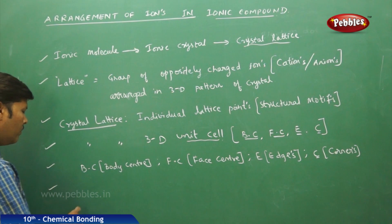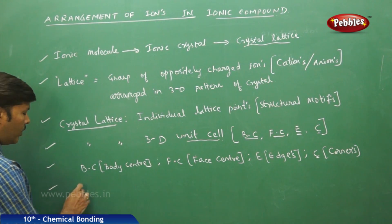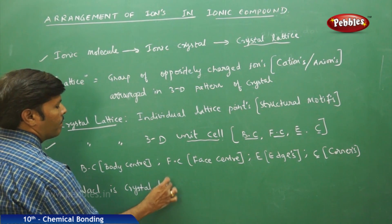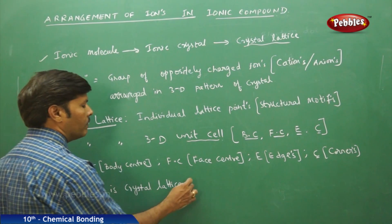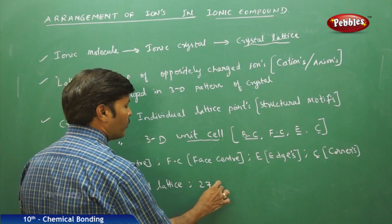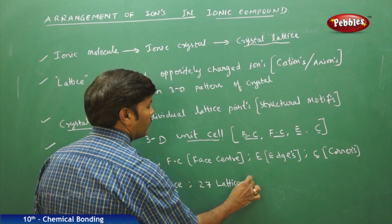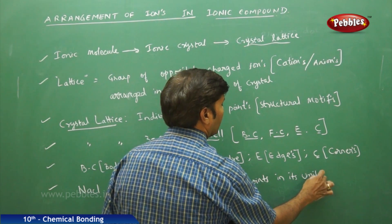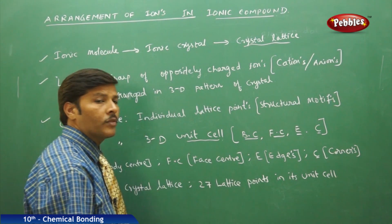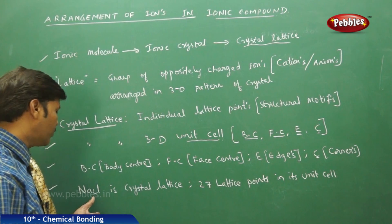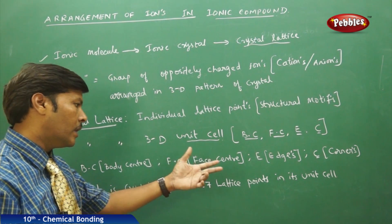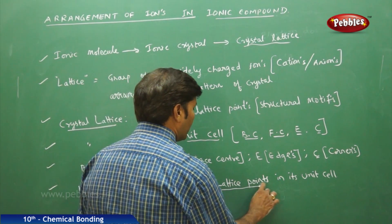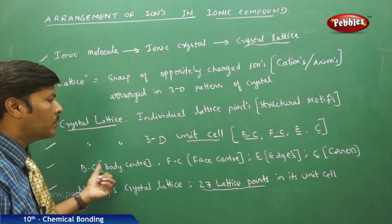Taking sodium chloride as an example of a crystal lattice: NaCl is a crystal lattice with twenty-seven lattice points in its unit cell. The unit cell is the smallest portion of the crystal lattice that retains all the properties of the crystal. For sodium chloride, these twenty-seven lattice points cover all four types of lattice points: body center, face center, edges, and corners.